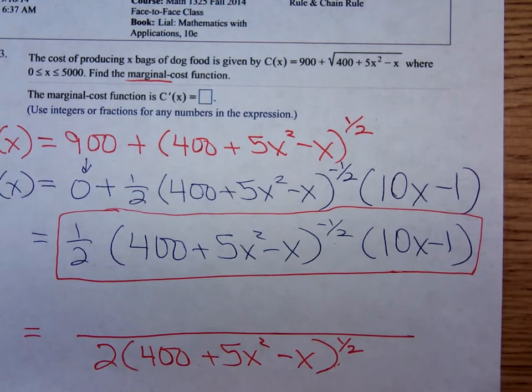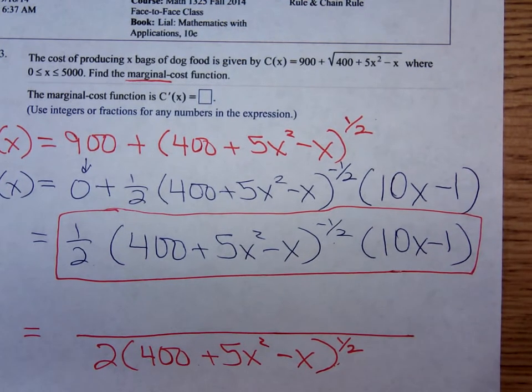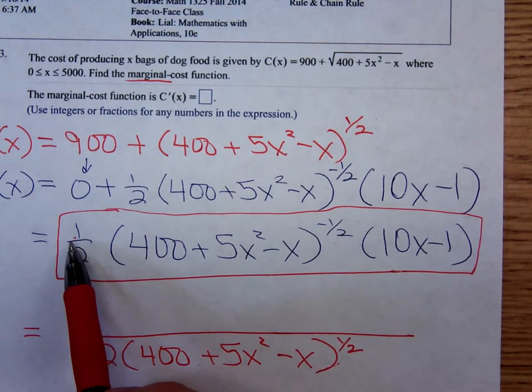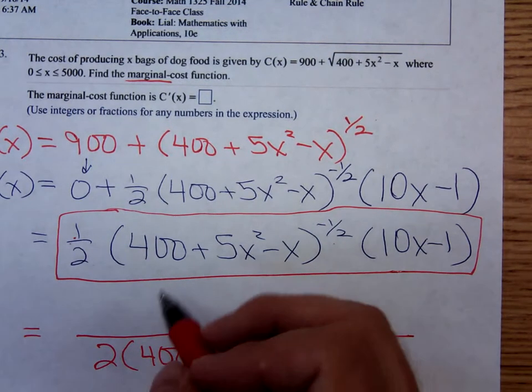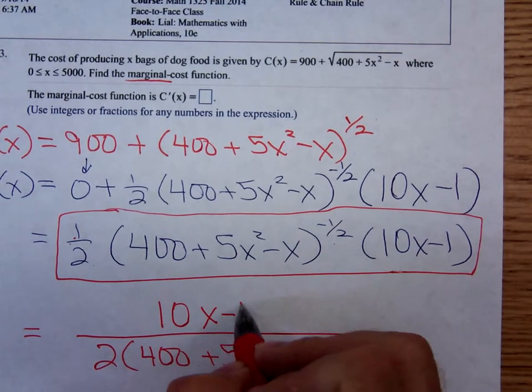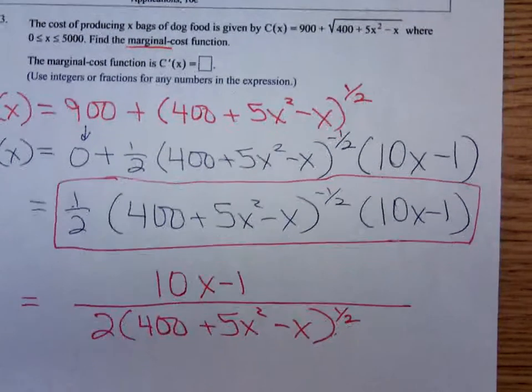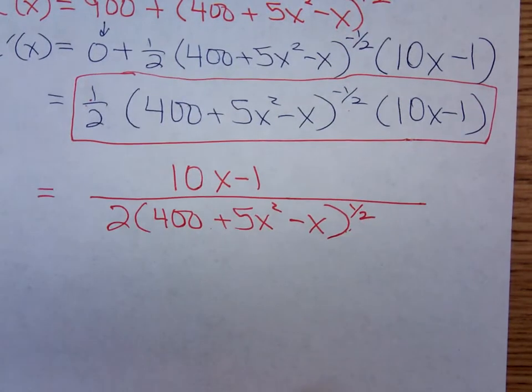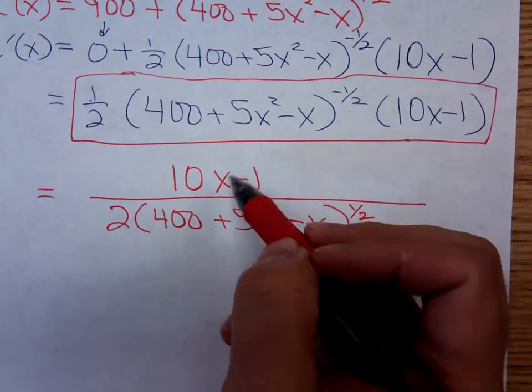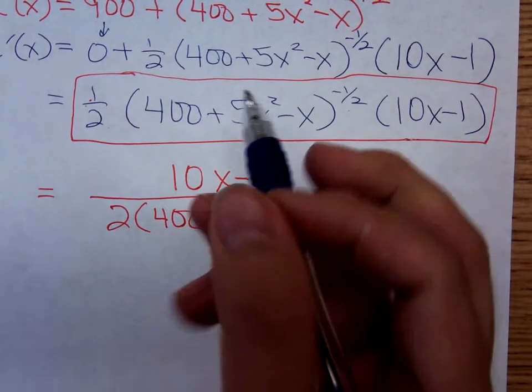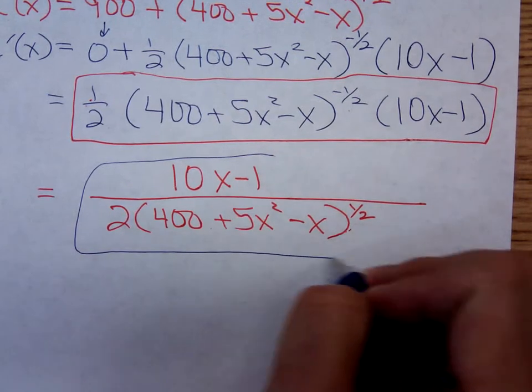Where does the 10x minus one go? On top. Technically that one goes on top too. The one right here goes on top too, but one times 10x minus one is still just 10x minus one. And I'm going to move this up a little bit. And MyMathLab would accept this form also, and they would accept this form as well.